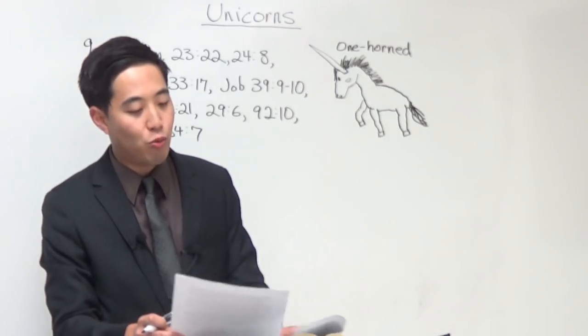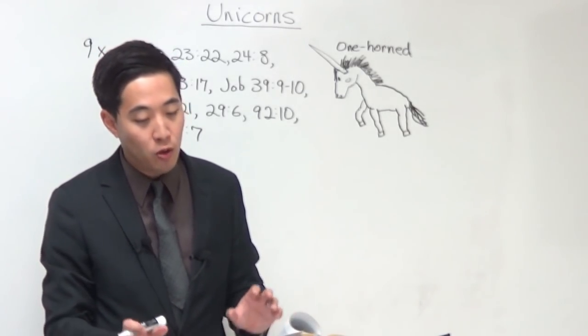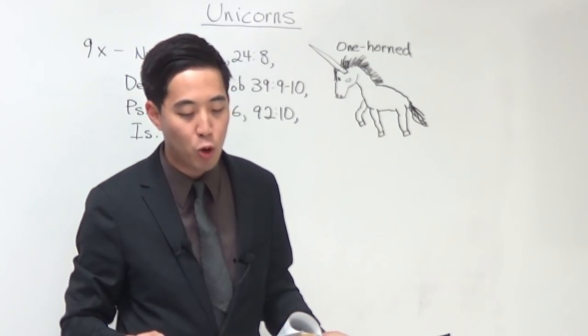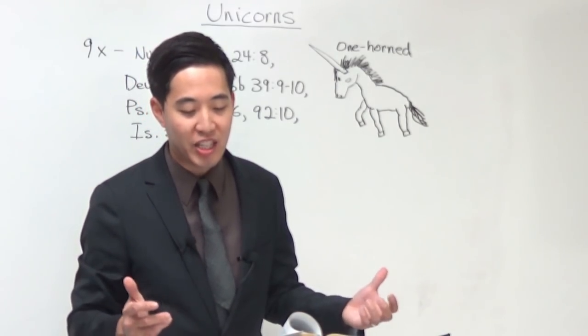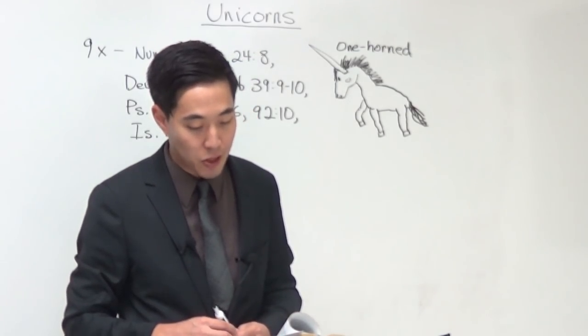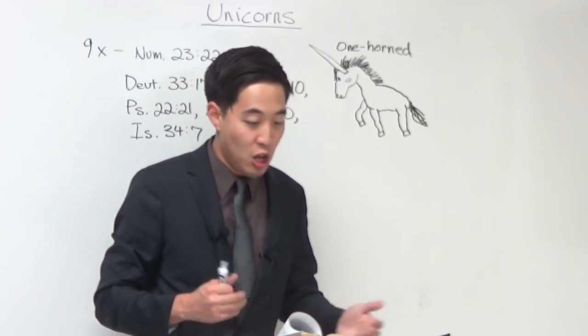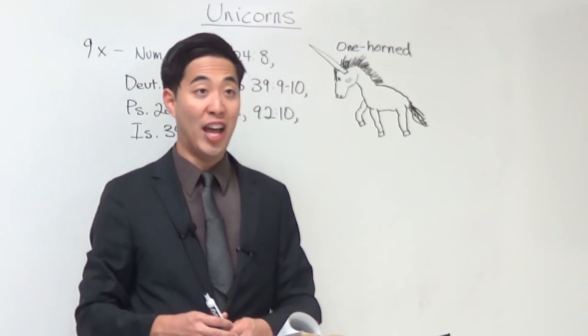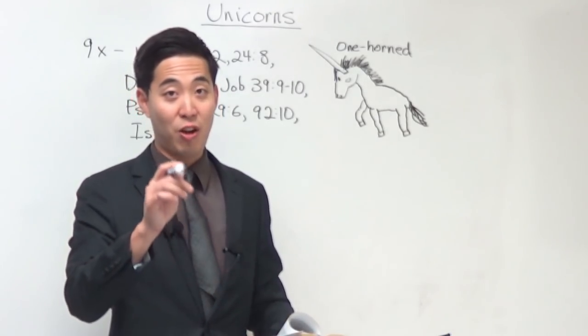It feels more like a deer or even a horse, so to speak. Psalms 29 verse 6, he maketh them also to skip like a calf, Lebanon and Syrian like a young unicorn. So, at times we can see in the Bible, I see mostly over here, you can see an ox over here and most of these passages. But in some of them, it wouldn't make sense.